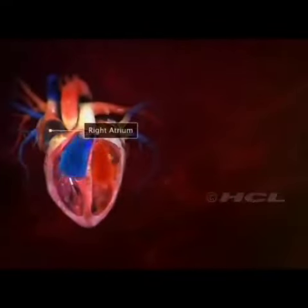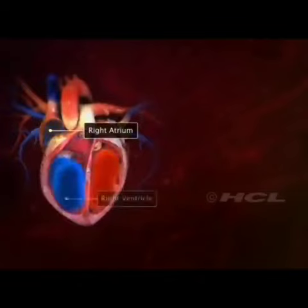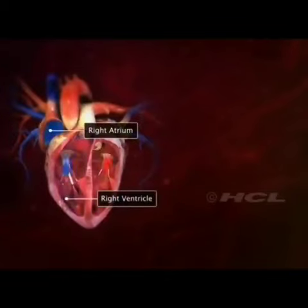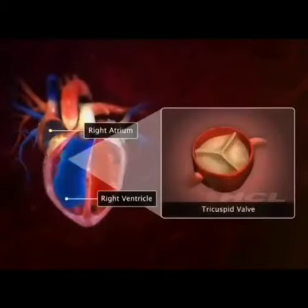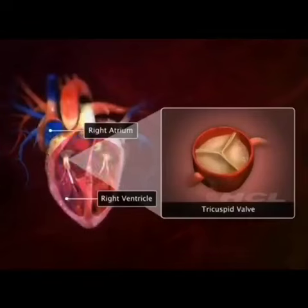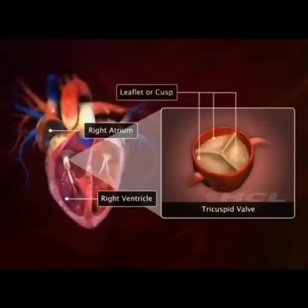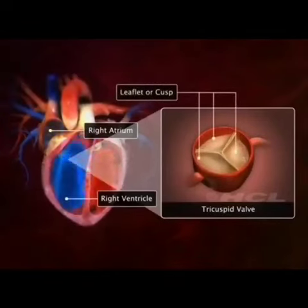The right atrium and right ventricle are connected through a tricuspid valve. As the name suggests, it has three leaflets or cusps.